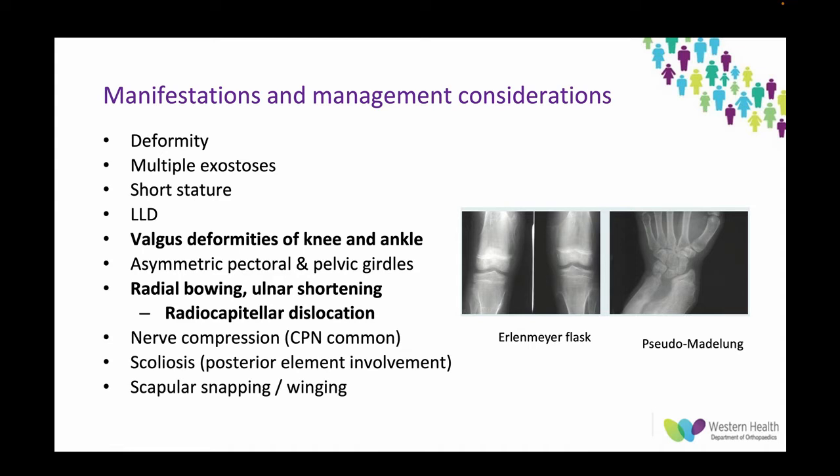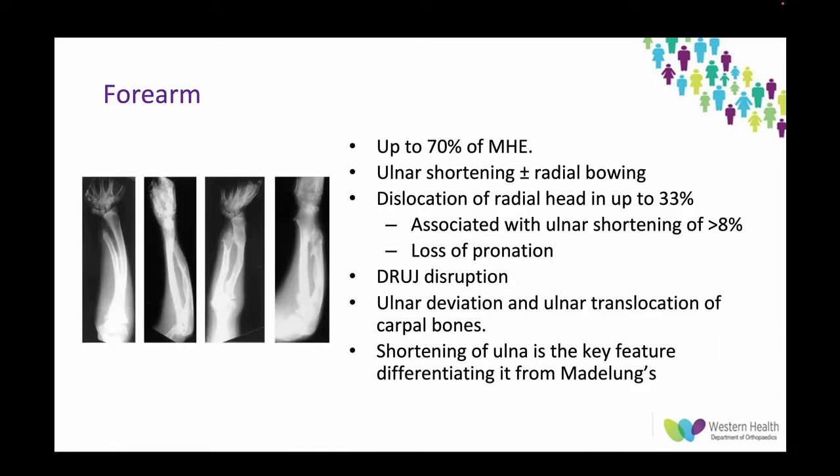All these patients need a full neurovascular exam because they can get common peroneal nerve involvement or other nerve compressions. Scoliosis has also been reported, typically with osteochondromas in the posterior elements. These patients can get myelopathy — although rare, there is increasing literature to show that.